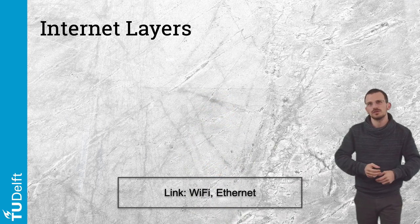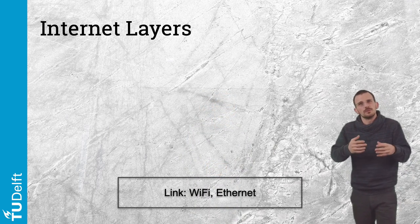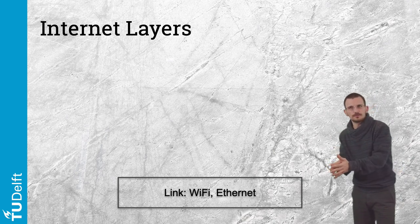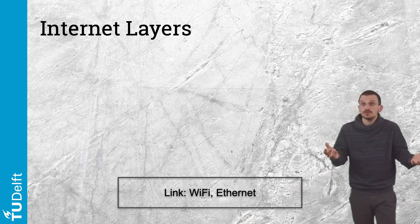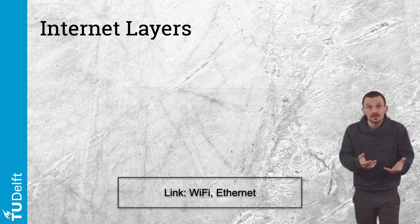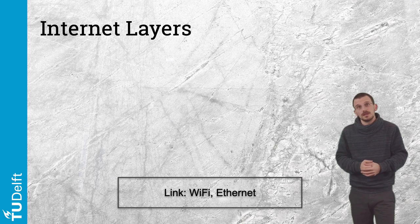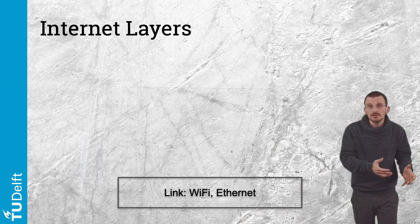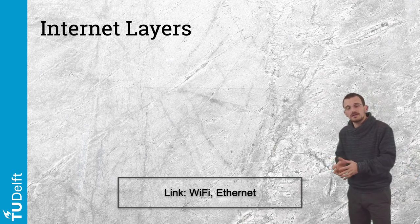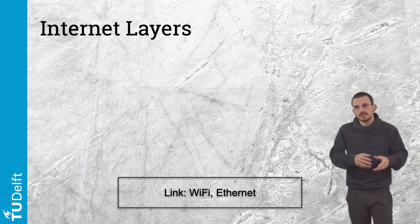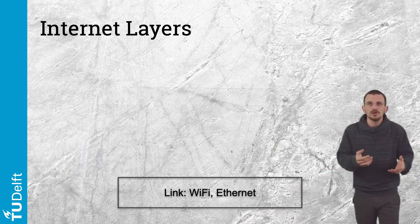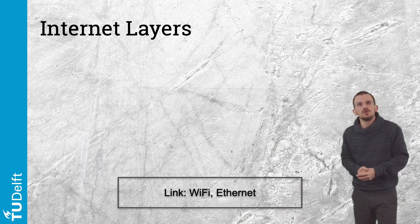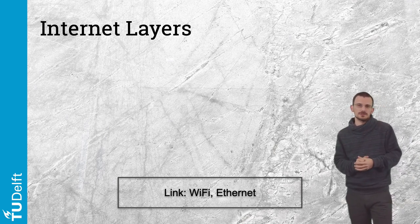The link layer transfers information from one computer to another. Examples are Wi-Fi or Ethernet — the choice between wired or wireless. We will learn more about those in the next module on network technologies.